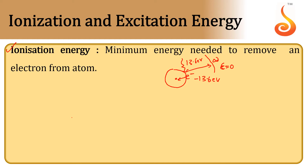For example, if the electron is in the second orbit, its energy will be minus 3.4 electron volts. Therefore, the amount of energy we need to provide to move it to infinity will be plus 3.4 electron volts. This is called ionization energy.